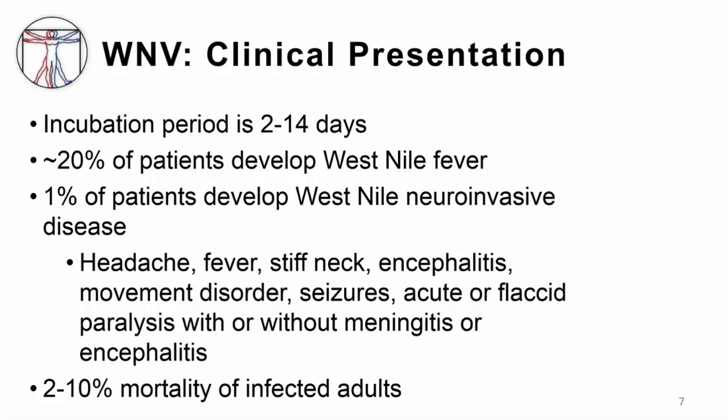About one percent of patients develop more severe disease — West Nile neuroinvasive disease — which is very similar to polio. These patients have headache, fever, stiff neck, and encephalitis. They may have a movement disorder, inability to control their limbs, seizures, and acute flaccid paralysis, with or without encephalitis. The flaccid paralysis occurs because there is damage to nerve cells within the spinal cord, and symptoms may progress to respiratory paralysis requiring mechanical ventilation, like the patients in the initial outbreak. The poliomyelitis can present as isolated limb weakness or paralysis. Overall, there is a two to ten percent mortality rate, primarily in older patients.